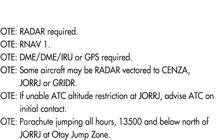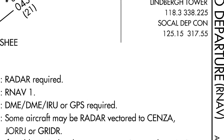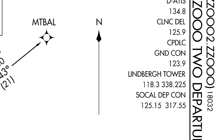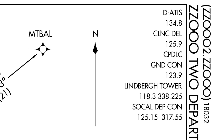The last piece of information to discuss is the upper right of the SID, where you will find all the useful frequencies of the area. This includes ATIS, clearance delivery, ground, Lindbergh tower, and SoCal departure. Please note that if you're flying online with VATSIM or a service like that, some or all of these frequencies might be different from the real-world frequencies, so pay attention to what the actual frequency is.